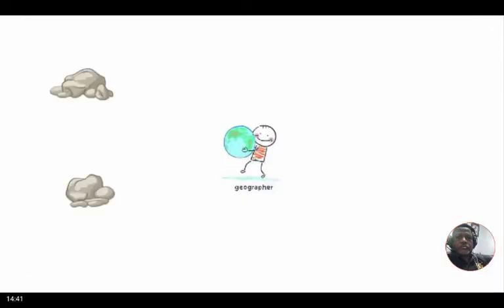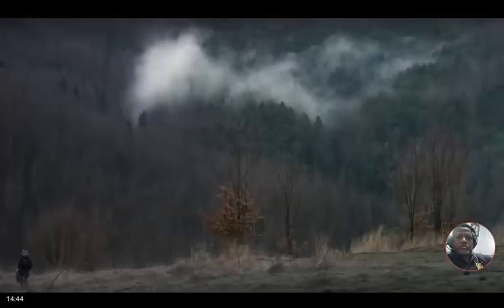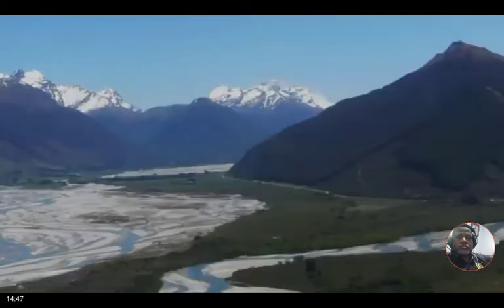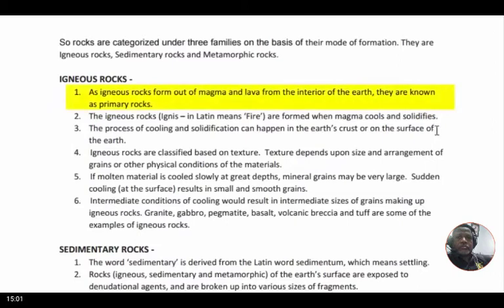If you become a geographer you'll need a basic understanding of rocks, because that's how you will get to know the landforms and the earth's surface. Rocks are categorized under three families on the basis of their mode of formation: igneous rocks, sedimentary rocks, and metamorphic rocks. Let's understand each one of them. The first is igneous rock.